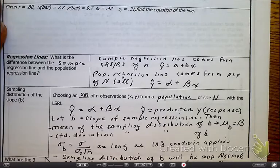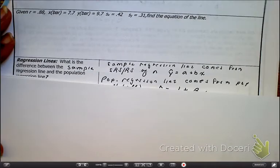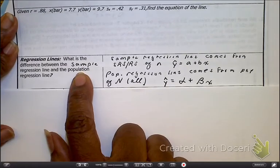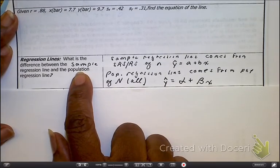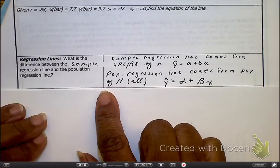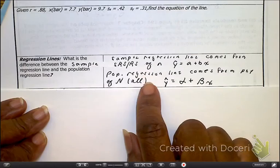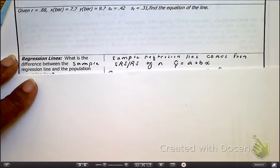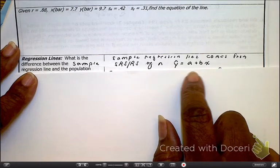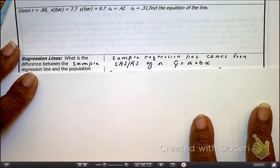Let's start on page 3 of our notes. So what is the difference between a sample regression line and a population regression line? Well, it's just like it sounds. A sample comes from an SRS or an RS. Here is your notation. We've seen it before. Y hat is equal to A plus BX. And of course, we know B is the slope. That is with our sample.